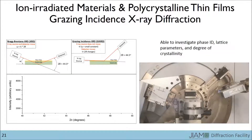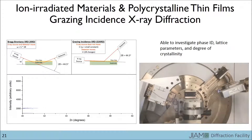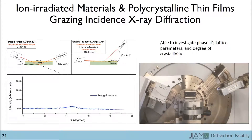Here you see the system in the Bragg-Brentano configuration, so the source and detector both begin at 20 degrees, which makes a starting 2 theta angle of 40 degrees. They then rotate at the same rate upward by 5 degrees, which makes an end angle of 50 degrees. This results in a very weak peak.